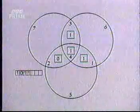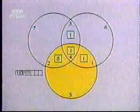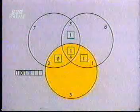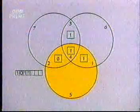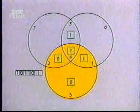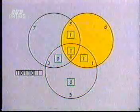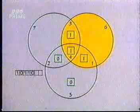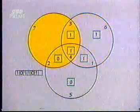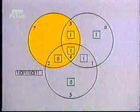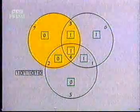In every circle, the number of 1s should be even. So here at the bottom, we have two 1s and a 0, so the remaining bit is a 0. Here we have three 1s, so the remaining bit must be a 1. And in this circle, we have two 1s and a 0, so the remaining bit must be a 0.